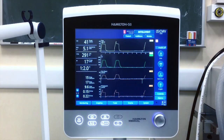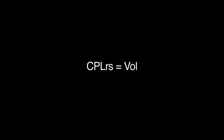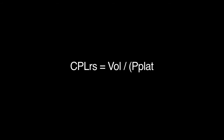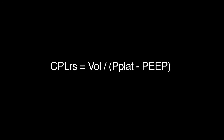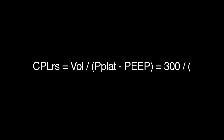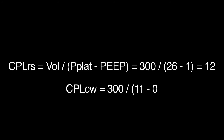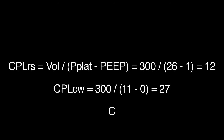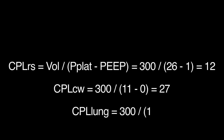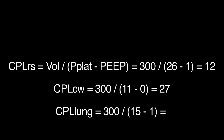Compliance of the respiratory system will be volume divided by plateau minus PEEP. Compliance of the chest wall will be the same but with the esophageal pressure, and compliance of the lung will be the same but with transpulmonary pressure.